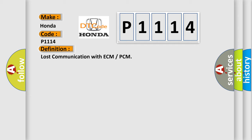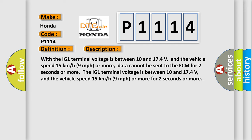And now this is a short description of this DTC code. With the IG-1 terminal voltage between 10 and 17.4 volts, and the vehicle speed 15 kilometers per hour or 9 miles per hour or more, data cannot be sent to the ECM for 2 seconds or more.